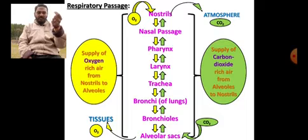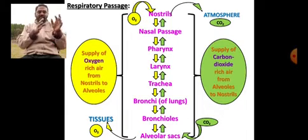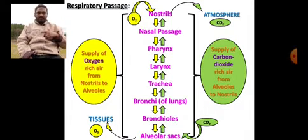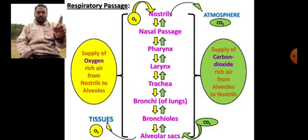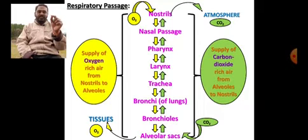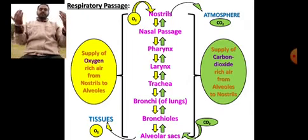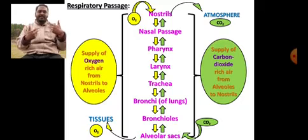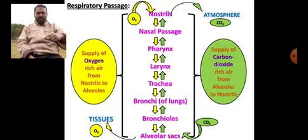Bronchi — that division — further get divided into small fractions like branches of a tree, called bronchioles. Bronchioles to alveolar sacs and alveoli, and from the alveoli, oxygen is given to the tissues through blood. This is what happens during inhalation — oxygen-rich air from nostrils to alveoli.